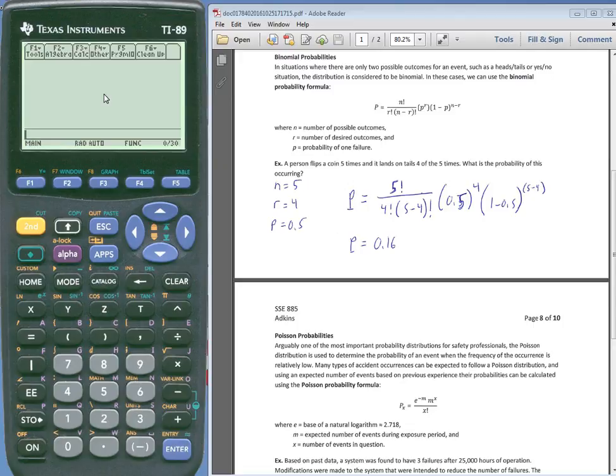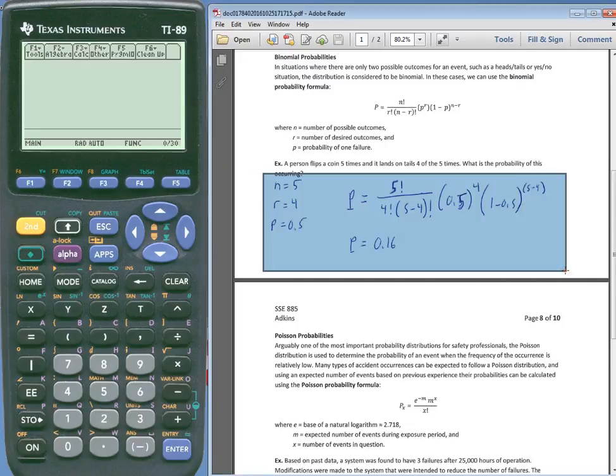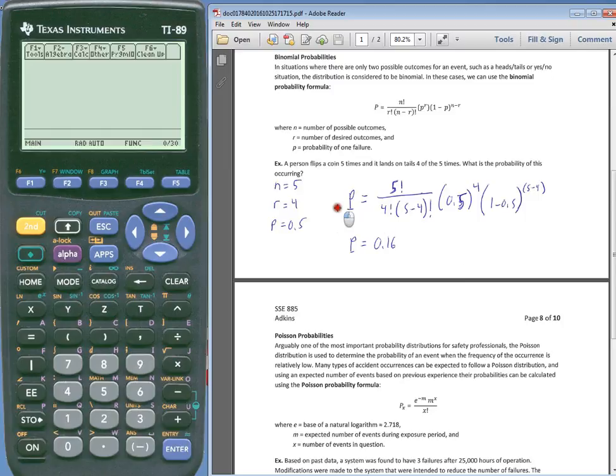So we've already seen this example worked out on the lecture. So I'm not going to go through that again, but what I want to show you is how to specifically input it into the calculator. You may notice I use little tails under the P. That's just so I can keep straight uppercase P and lowercase P because it gets confusing.